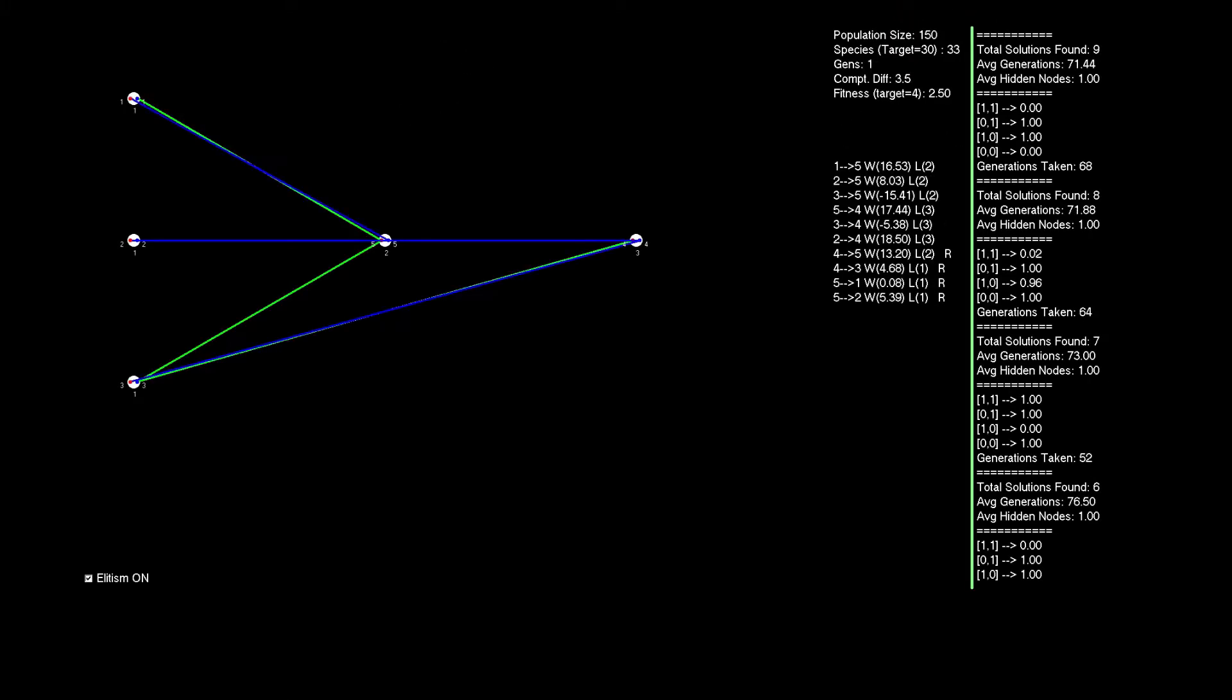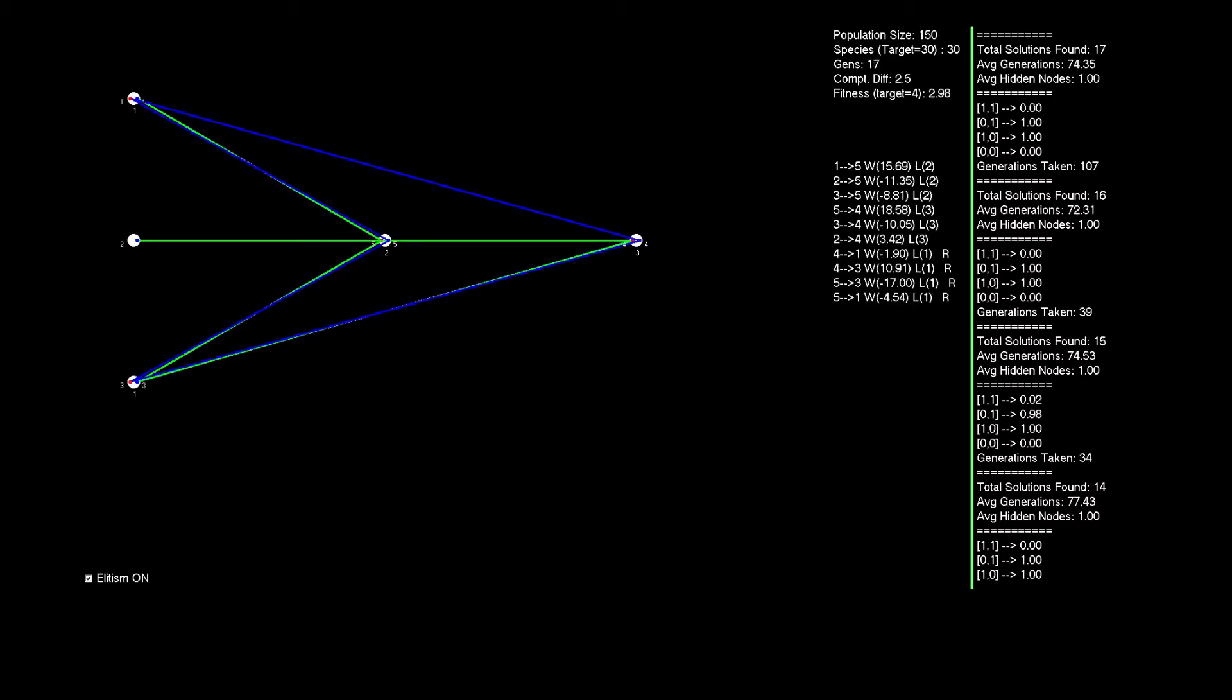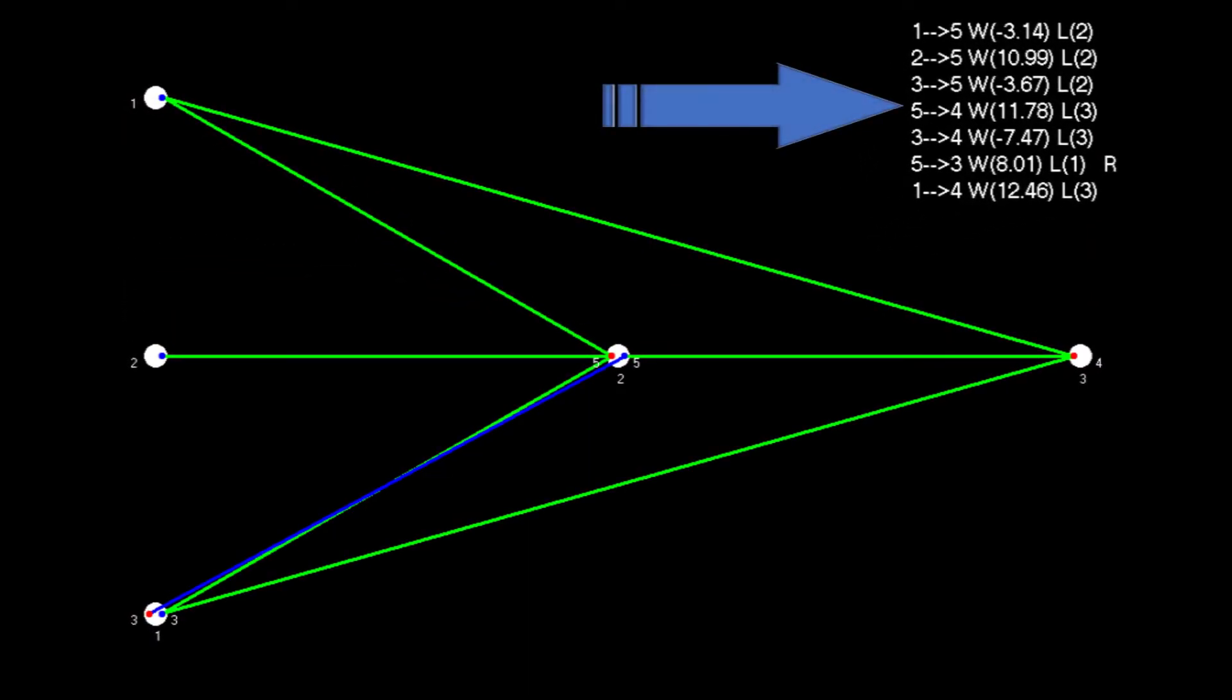So let's look at how a solution with a recurrent connection processes the inputs. To get one, I simply set the initial parameters to have one hidden node, and disable the add node option during the mutation stage. And of course, I allowed recurrent connections to be added.